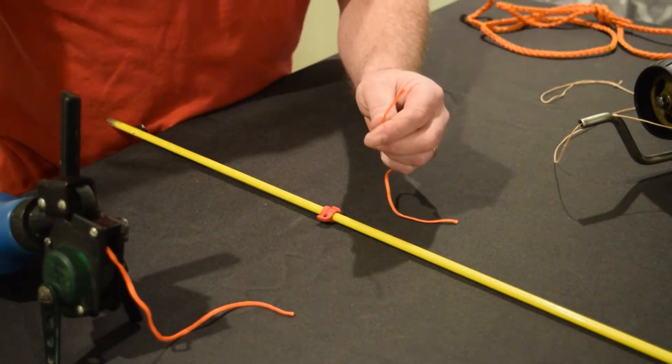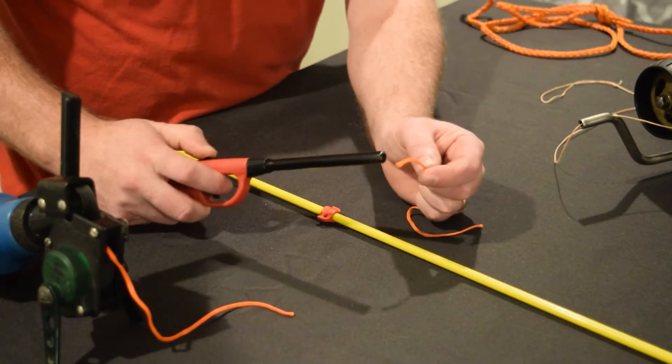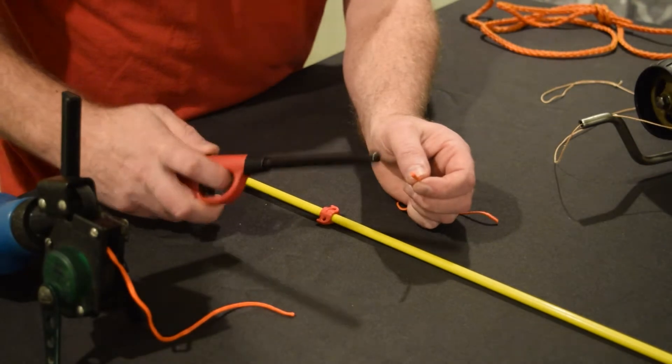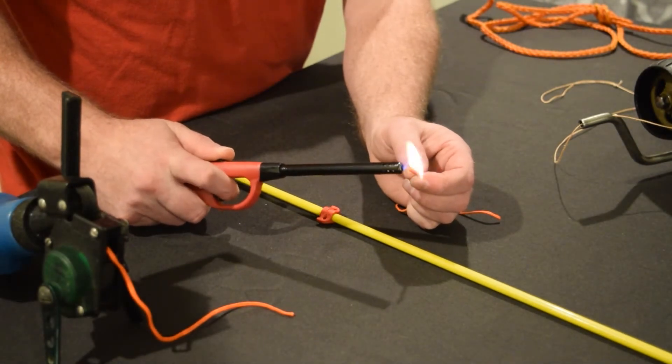I'm going to take a lighter, and I'm just going to hit the ends of this real quick just to prevent fraying and help this line slide through the safety slide just a little bit better.